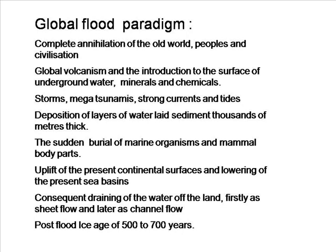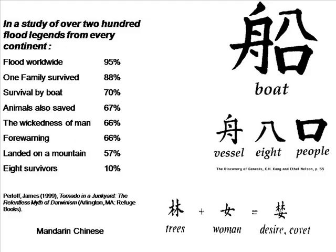The Genesis flood is taught in the Bible as a global catastrophe. The Old World peoples and civilizations were annihilated. Global volcanism and the introduction to the surface of underground water, minerals and chemicals, the deposition of layers of marine sediment thousands of metres thick, suggests storms, megatsunamis and movements of large bodies of water at high speeds, causing the sudden burial of marine organisms and mammalian body parts. Towards the end, the uplift of the present-day continental surfaces and the lowering of the present-day sea basins caused the draining of the water off the land, firstly as massive sheet flow and later as channel flow.